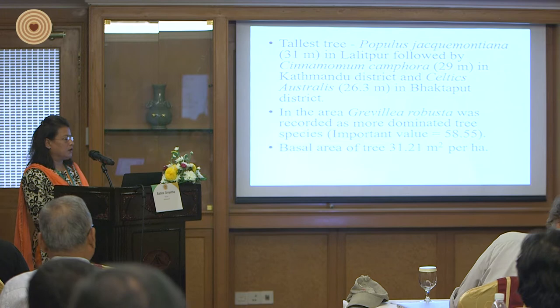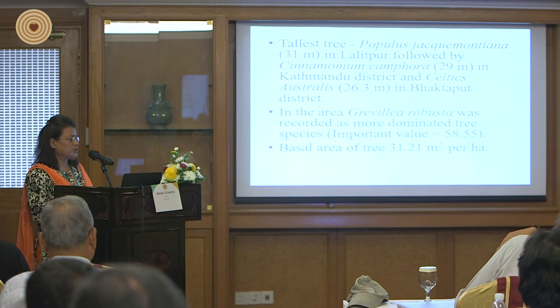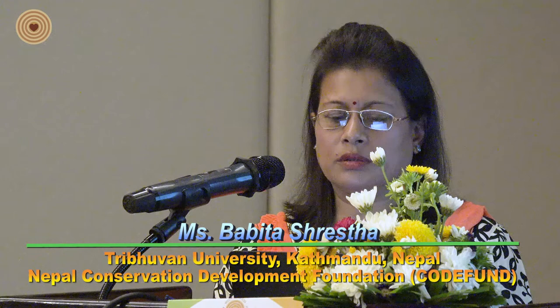In the whole Kathmandu Valley, Grevillea robusta was found as the dominant tree with an importance value of 58.55, and a basal area of 31.21 square meters per hectare.